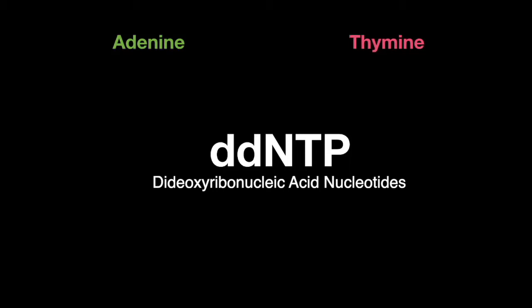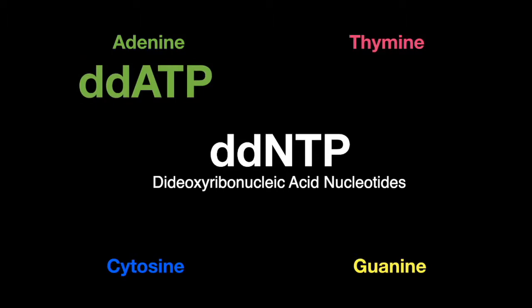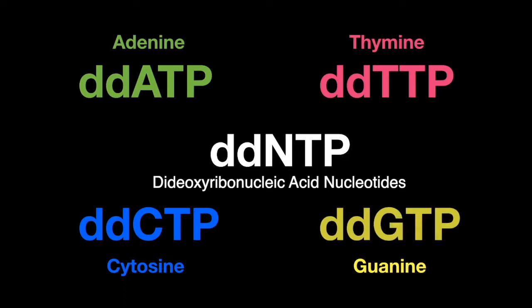But just like the normal nucleotides, DDNTPs come with adenine, thymine, cytosine, and guanine. So you can have abbreviations of DDATP, DDTTP, DDCTP, and DDGTP.